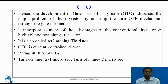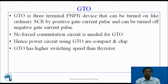For such a GTO, it requires gate current of 1/4th to 1/5th of the rated ampere. The turnoff time of GTO is 2 to 4 microseconds and turn-on time is 2 microseconds, which is less than thyristor. GTO is a 3-terminal PNPN device that can be turned on like an ordinary SCR by a positive gate current pulse and can be turned off by a negative gate current pulse.